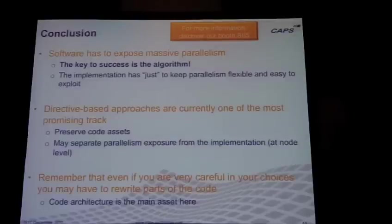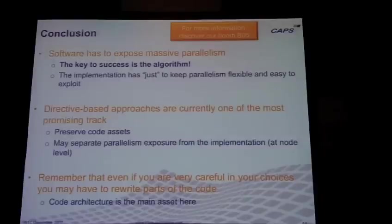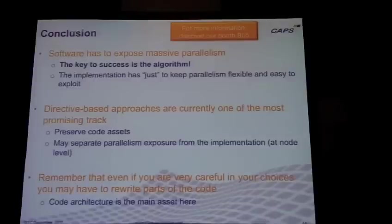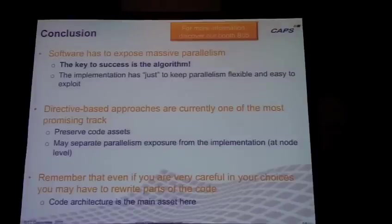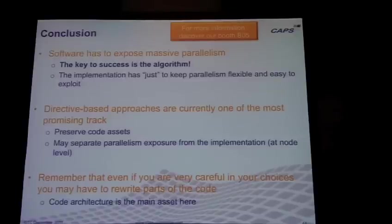To conclude: the key success factor is the algorithm — that's the base. Tools, techniques, and best practices are just there to keep the parallelism alive and efficient. We believe the directive-based approach is one of the most promising tracks: it preserves properties for debugging, makes few assumptions on the future — you're not assuming the future will be OpenCL everywhere — and it separates parallelism from the implementation. If you take OpenACC or HMPP, you're not making many assumptions on the architecture — you're trusting the compiler to regenerate the right implementations. And the code architecture is very important: the ability to separate the performance part from the application part will be, in the future, a major asset.